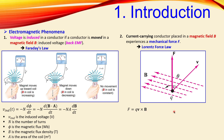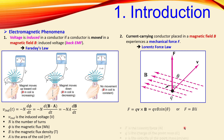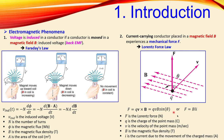The Lorentz force can be written mathematically as F = q(v × B), where q is the charge, v is the velocity vector, and B is the magnetic flux density. In terms of magnitude: F = qvB sin(θ), where θ is the angle between v and B. Alternatively, the Lorentz force can be written using the length of the wire L and current I: F = BIL sin(θ).